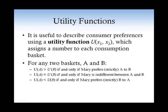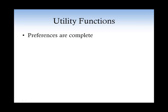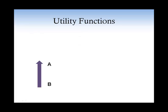But how can we be sure that such a utility function actually exists for Mary? Well, we need to assume that Mary's preferences are complete. We also need to assume that Mary's preferences are transitive. This means that if Mary likes A better than B and she also likes C better than A, then we assume that Mary must like C better than B.